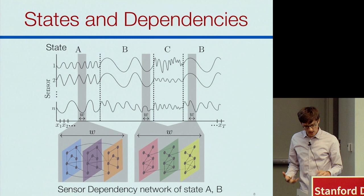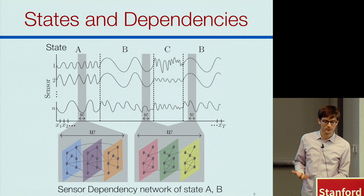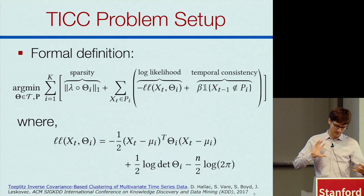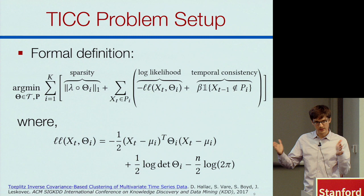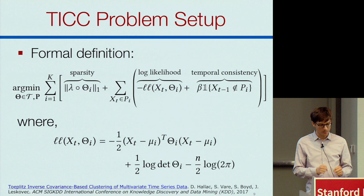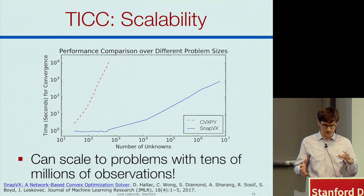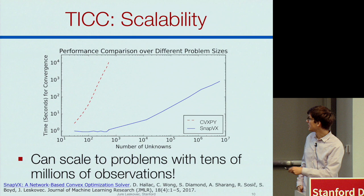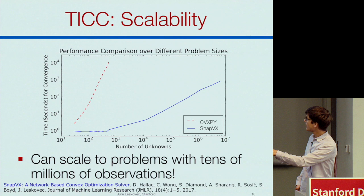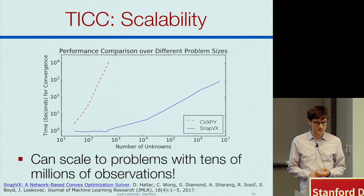We have a scalable and theoretically justifiable way to do this by defining a big convex optimization problem that simultaneously performs the segmentation of the time series into states and learns the dependency networks. We have a convex optimization solver based on the ADMM method that scales to very big problems — learning problems with tens of millions of unknowns much faster than a standard solver like CVX-py.